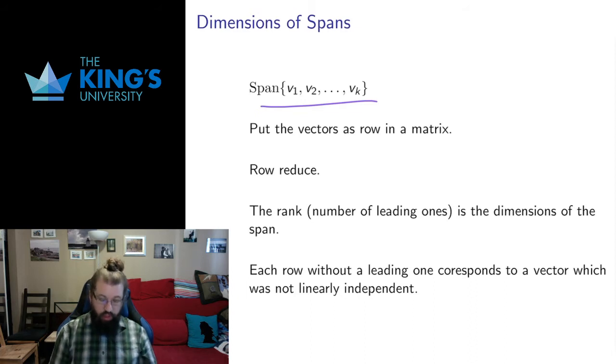But the problem is I might have redundancies. I might have some relationship between these vectors that means that one or two or three of them are not fundamentally new directions. I need to figure out this redundancy.